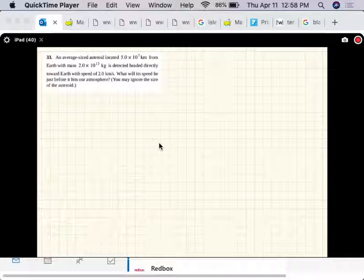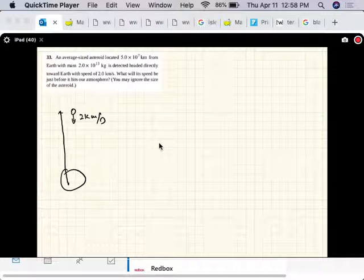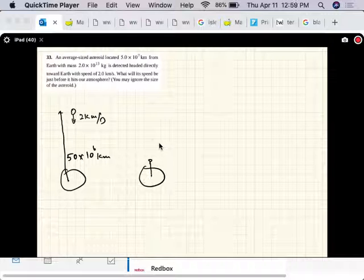So here's the asteroid, and it's going at two kilometers a second, located 50 million kilometers away. We'll assume it's from the center of the Earth. It won't matter whether it's from the surface because the radius of the Earth is small compared to this. Even though it's not said in the problem, it's implied that distance is from the center of the Earth.